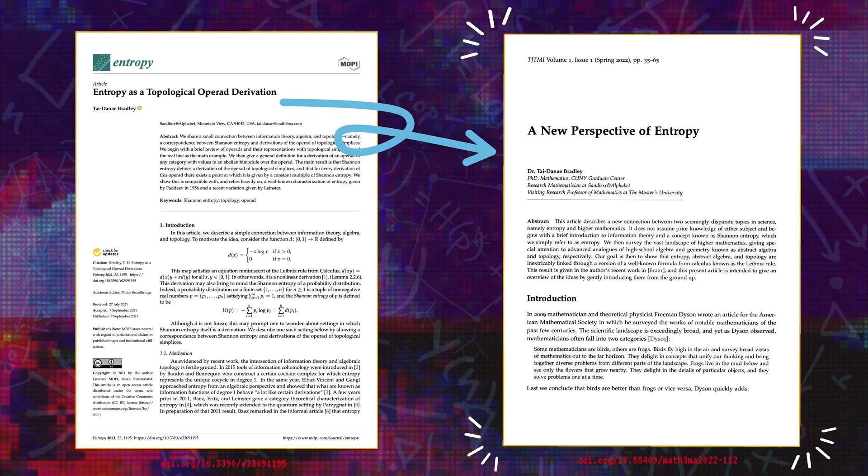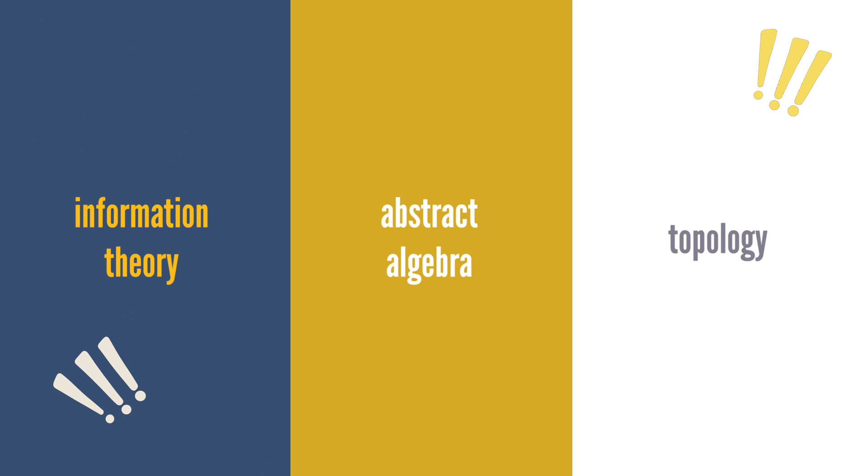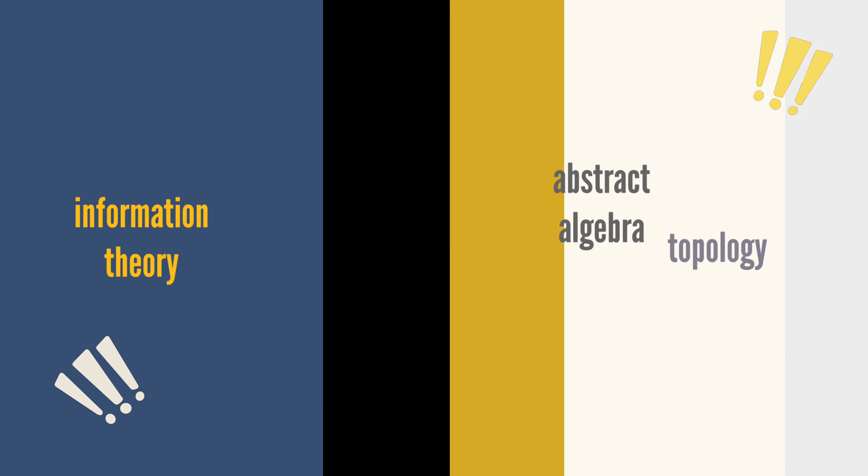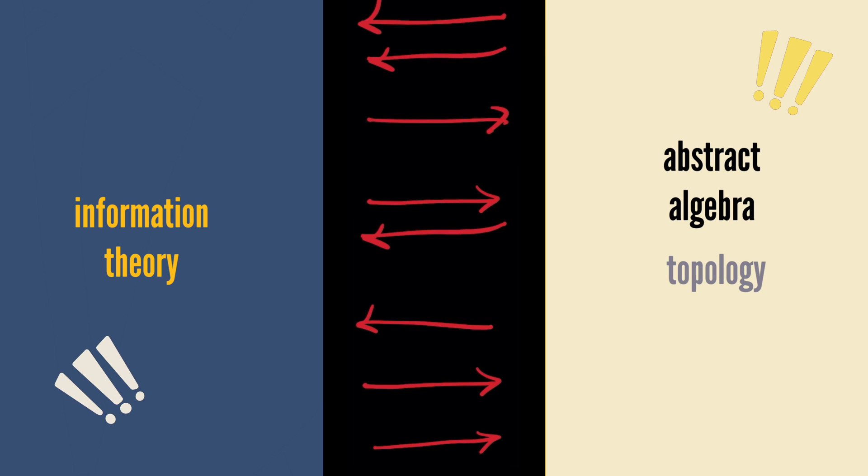And this result about entropy in pure math is really just a small theorem that connects three things: information theory, abstract algebra, and topology. And that's interesting because traditionally these don't have much to say to one another, and yet, as we'll see, they actually go hand in hand.